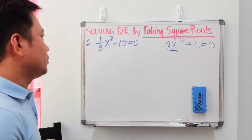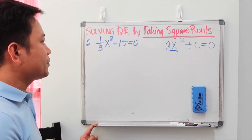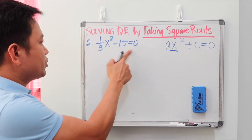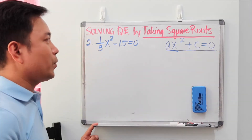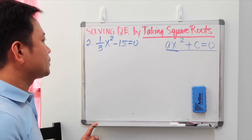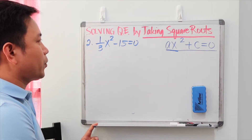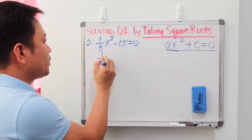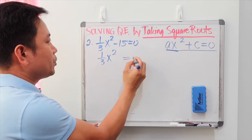For example 2, we have one-third x squared minus 15 equals 0. This quadratic equation is also in the ax squared plus c equals 0 format, so we can use the taking square roots method. Step one is to isolate x squared on the left side, giving us one-third x squared equals 15.